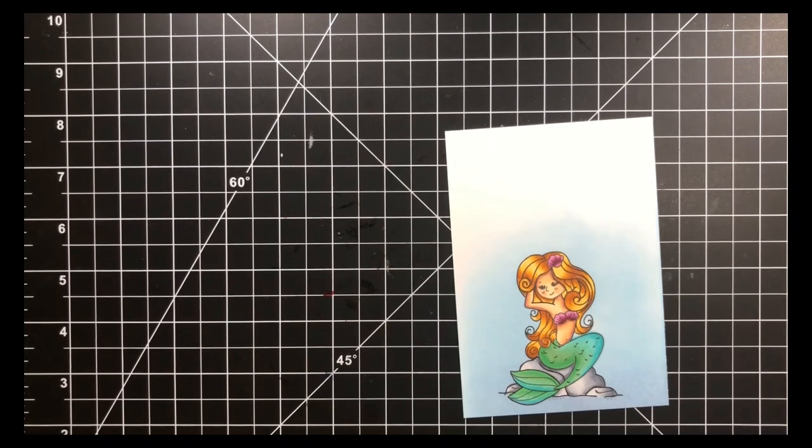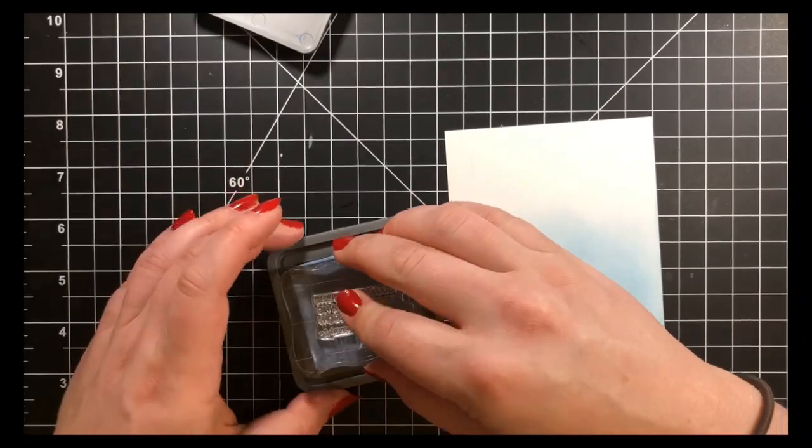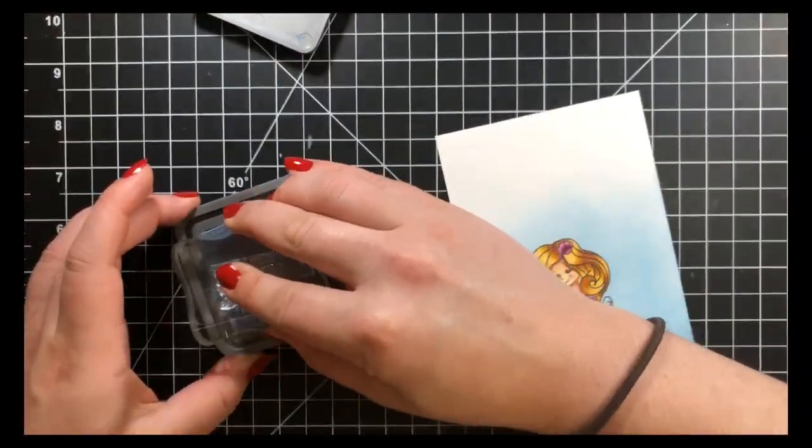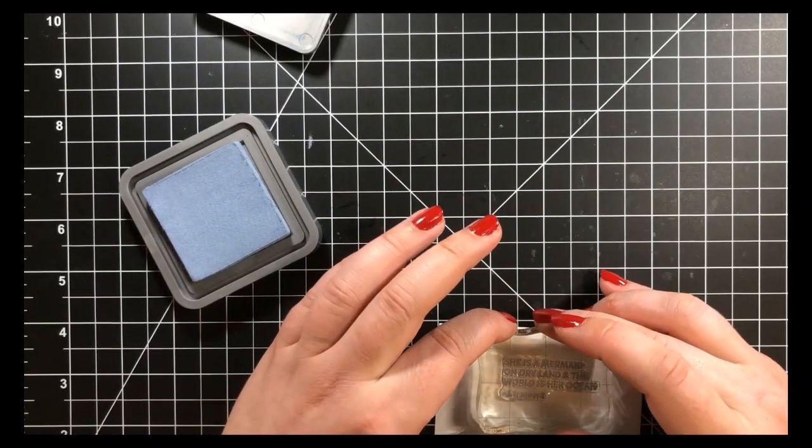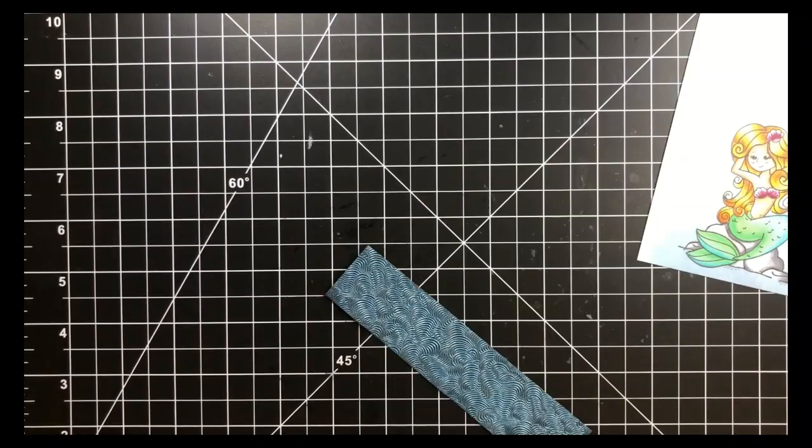Next, I'm taking one of the sentiments from that stamp set and I'm going to be using the Stormy Sky Distress ink and I'll be stamping that in the top part of the card panel. The good thing about Distress Oxides is that you can stamp with them they give a great impression so it's a good way to match your background.